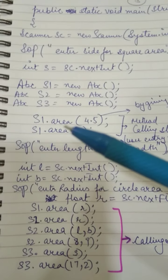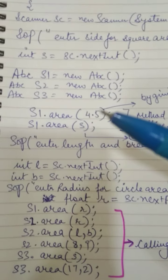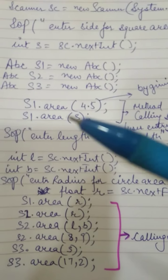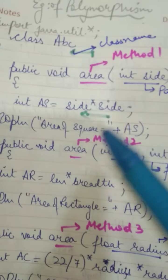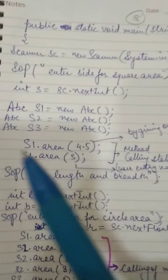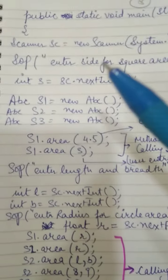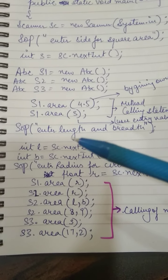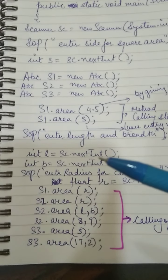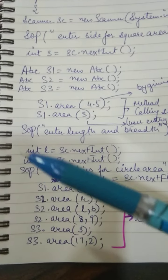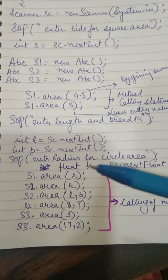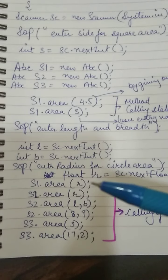s1 is the object calling the area method. The value we supply is called the actual parameter — the actual value supplied so it can go to the method body, execute, and return back to the main method. Next, we prompt 'enter length and breadth', and take two more values using the Scanner class, stored in l and b variables.